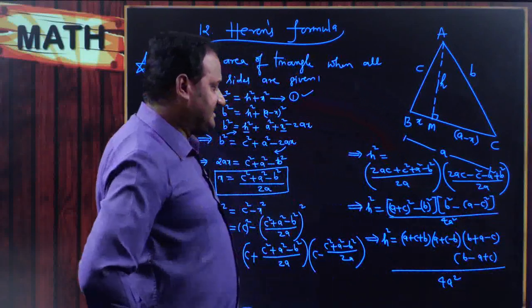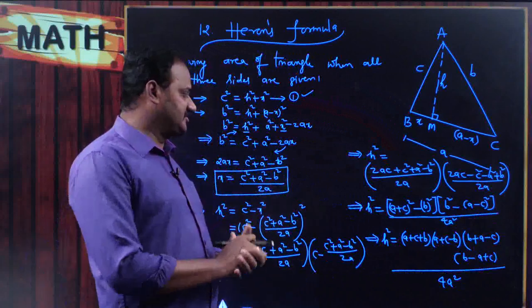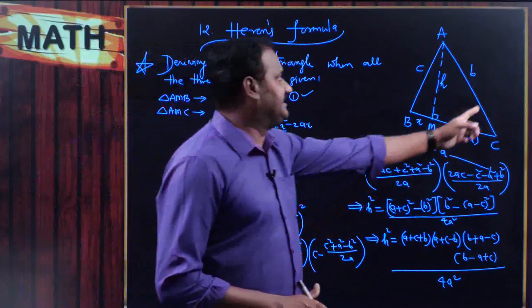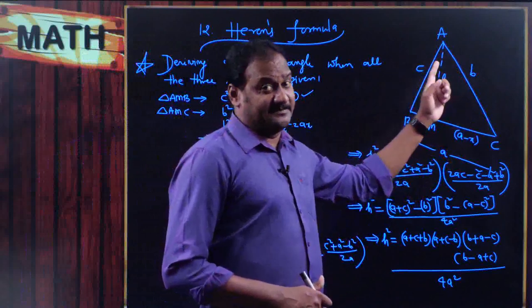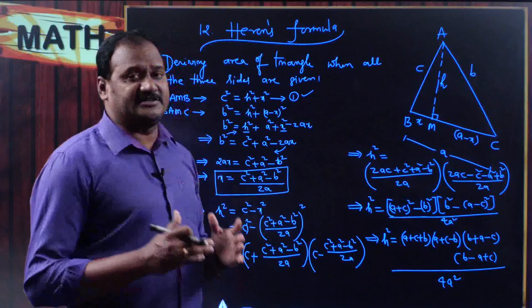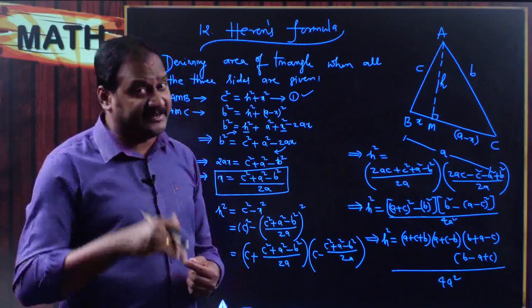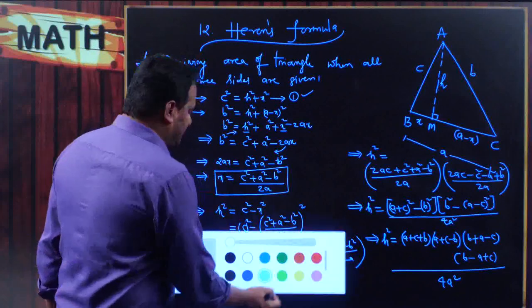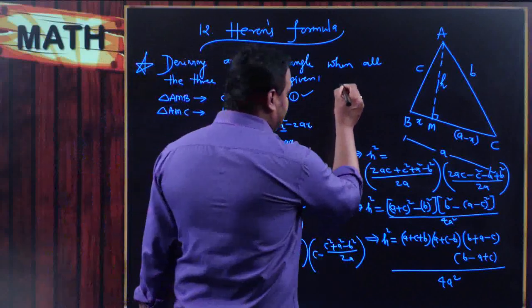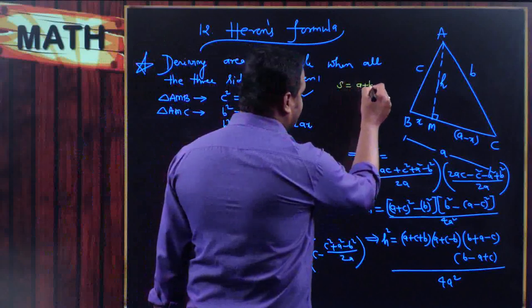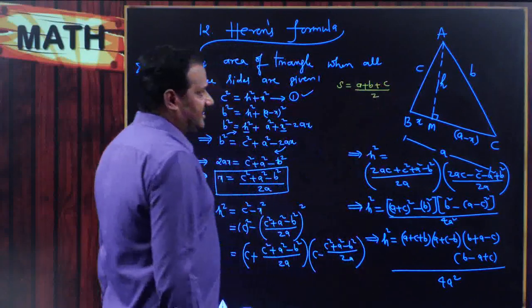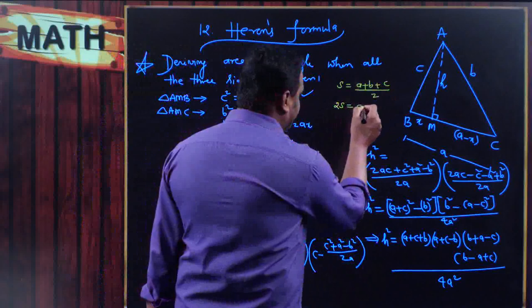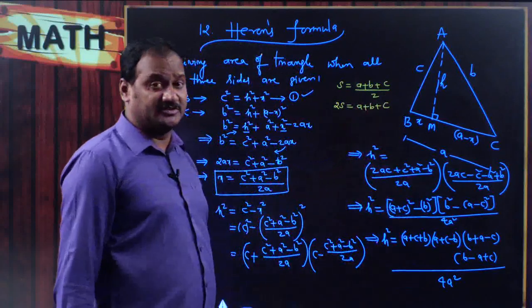Now notice that a + b + c is the perimeter of the triangle. We define the semiperimeter S = (a + b + c) / 2, so by cross multiplication, 2S = a + b + c. The term (a + c + b) can therefore be written as 2S.